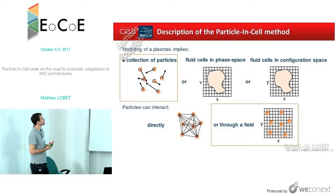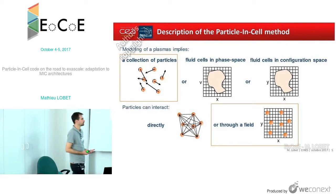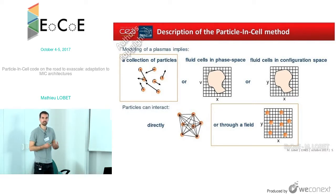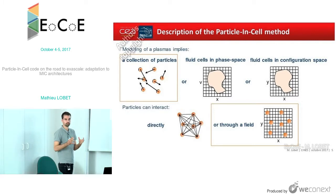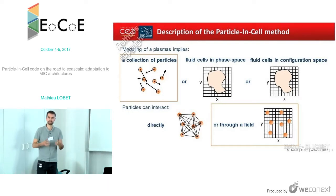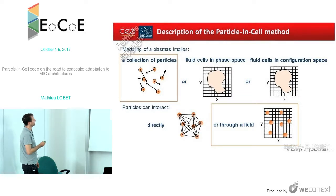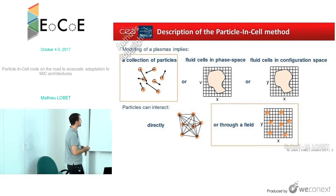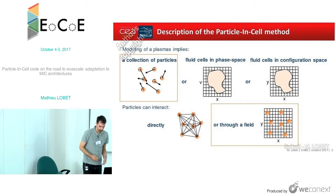The difference between the particle-in-cell method and other kinds of plasma modeling is that here we use a collection of macro-particles — not real particles, but groups of real particles having the same properties from the same species and having the same kinetic properties. In order to calculate the interaction between all these particles, we use a field modeled via a grid. So we do not compute the interaction directly, as we could do in Monte Carlo codes, for instance.